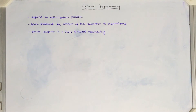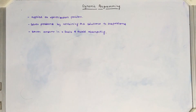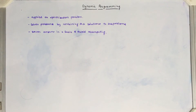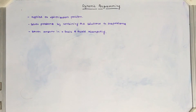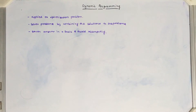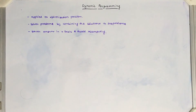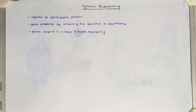The solutions of subproblems are stored using a tabulation method and reused to calculate solutions for larger problem sizes, reducing the total computation time. Dynamic programming does not guarantee an optimal solution, but it is guaranteed to solve the problem because we try all possibilities and reduce computational time by reusing subproblem computations.